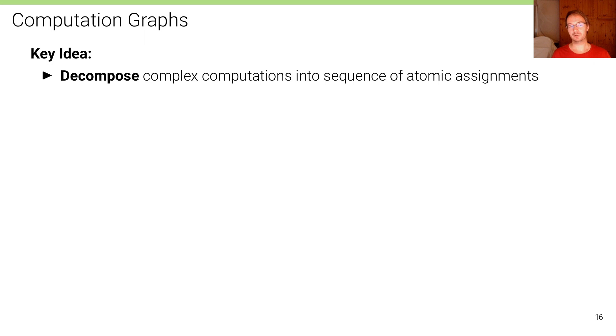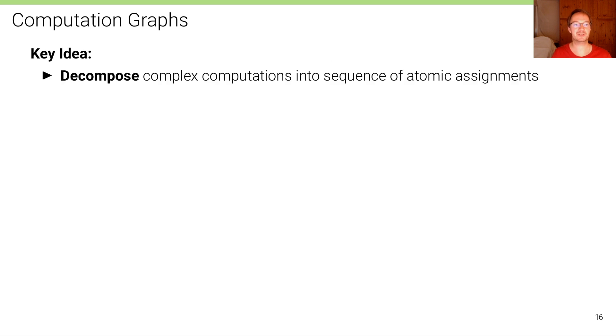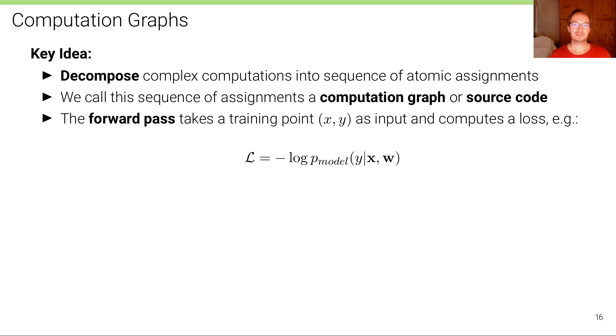The key idea of computation graphs is what the backpropagation algorithm does. In order to understand backpropagation better, we need to understand what a computation graph is first. The key idea is to decompose complex computations into sequences of very simple, more atomic assignments. We call the sequence of assignments a computation graph, or some people also call it the source code, because like a computer program that you execute line by line. The forward pass then takes a training point x and y as input and computes a loss from that.